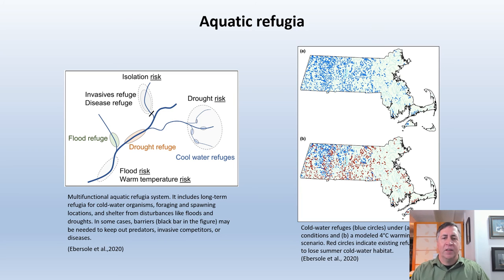In some cases, barriers may be needed to keep out predators, invasive competitors, or diseases. The surrounding drainage area, or watershed, should be managed to provide stable flows and minimize pollution. The figure on the right shows cold water refuges in Massachusetts — the dark blue circles — under current conditions (A) and in a modeled 4 degrees Celsius warming scenario (B). Red circles indicate existing cold water refuges likely to lose cold water habitat in summer months.